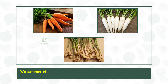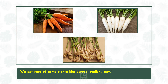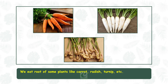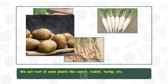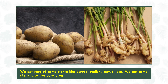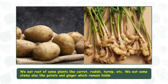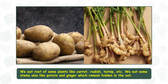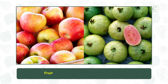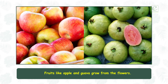We eat the root of some plants like carrot, radish, turnip, etc. We eat some stems also, like potato and ginger, which remain hidden in the soil. Fruits like apple and guava grow from the flowers.